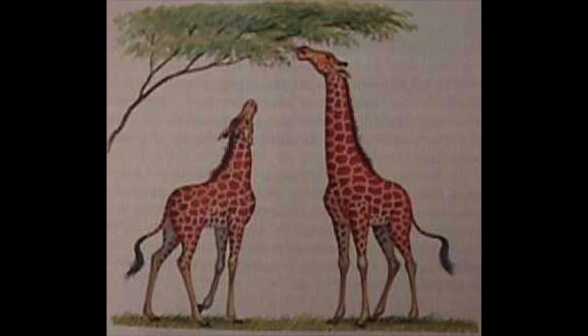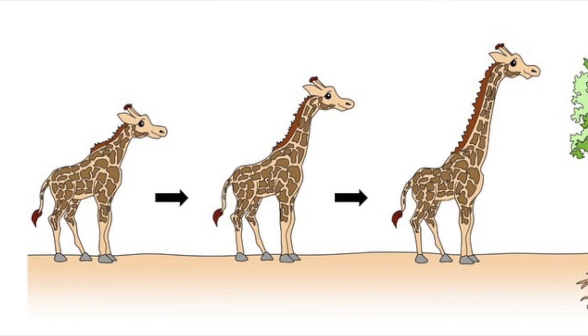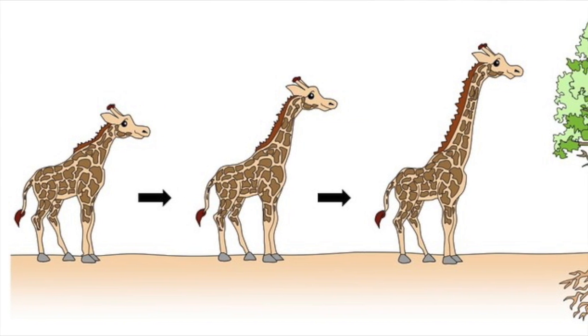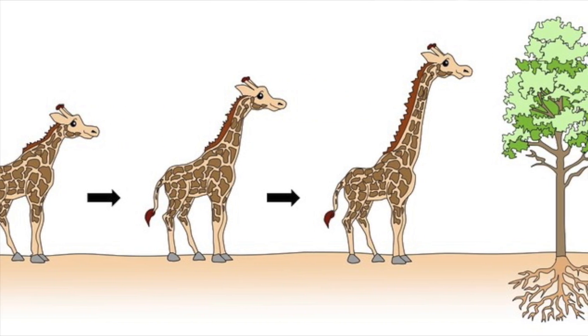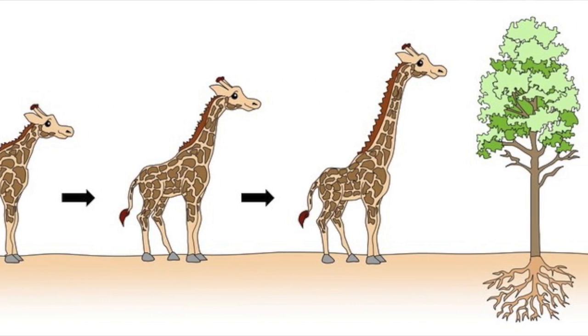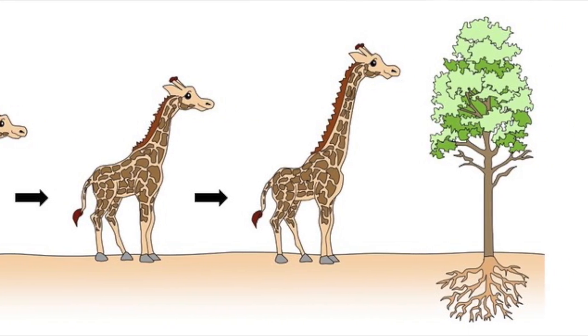It used to be thought that giraffes developed their long necks because shorter-necked ancestors were reaching for their food over a long period of time. That's not how it worked. The mutation for a long neck showed up, proved itself to be an advantage, and was kept in the population over time.